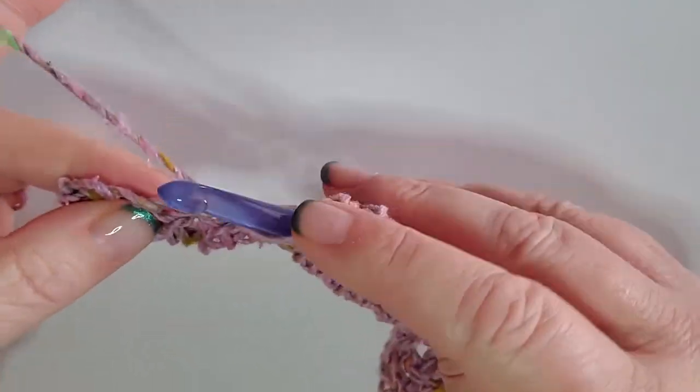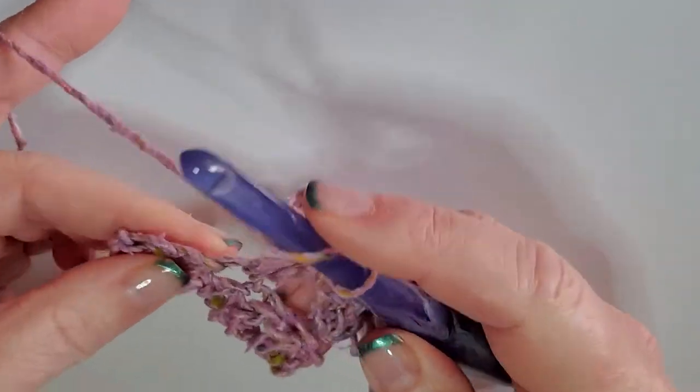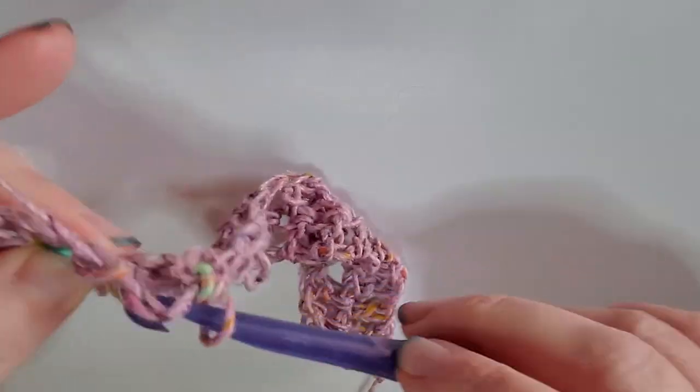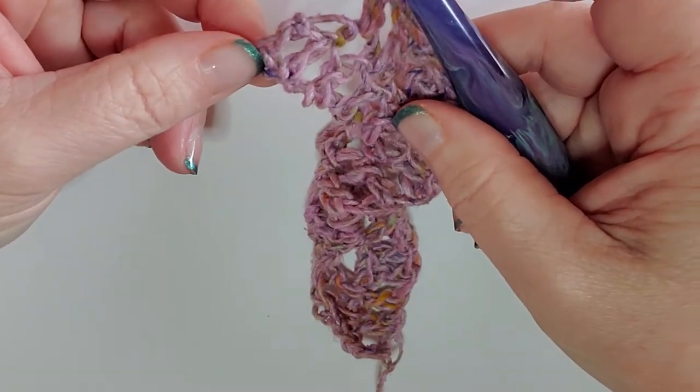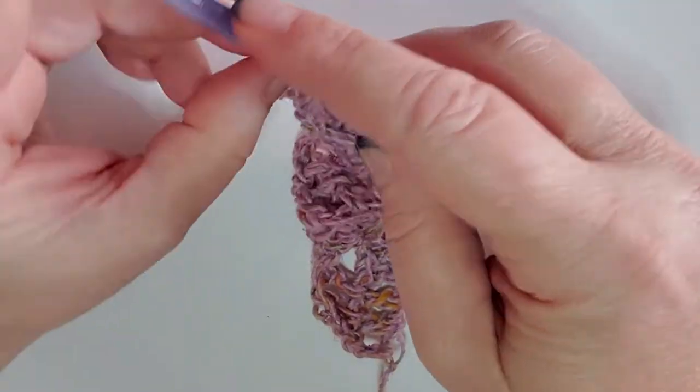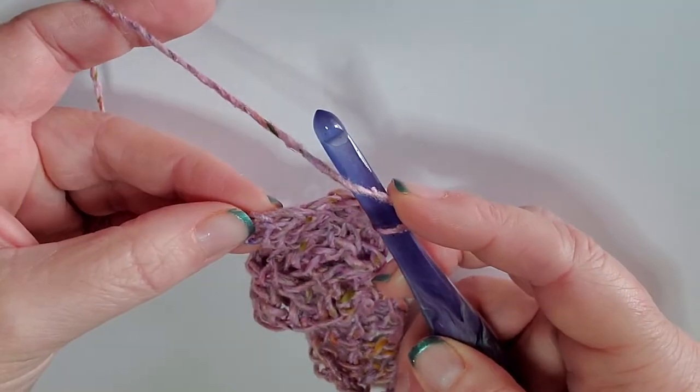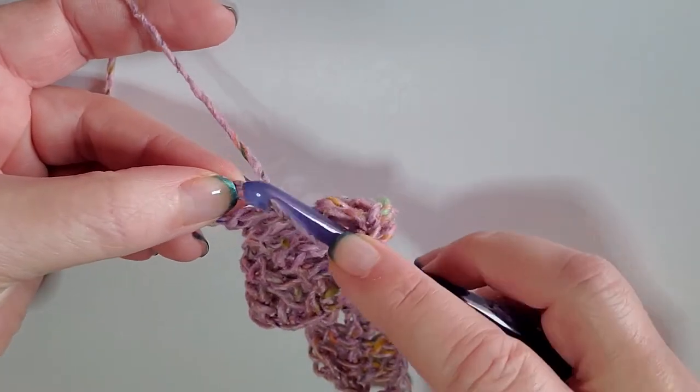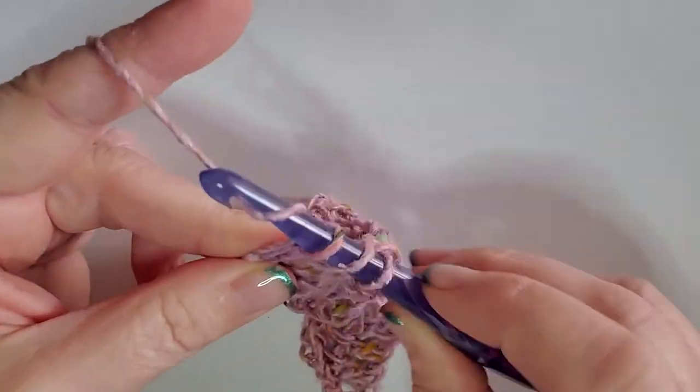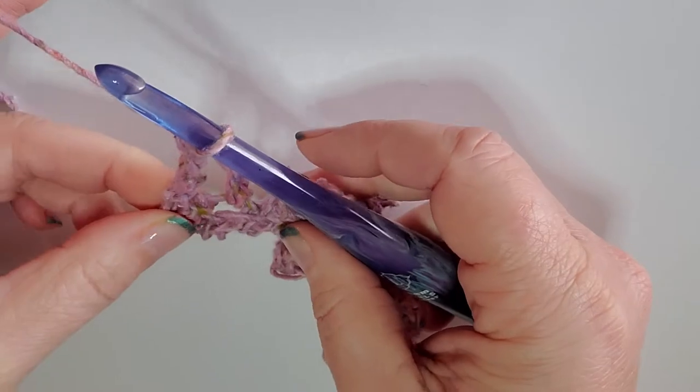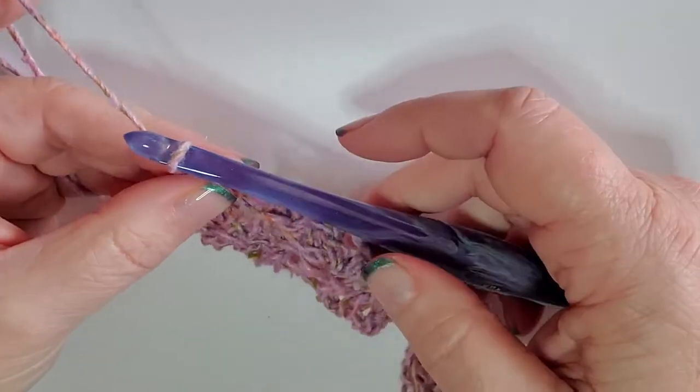You will end every row, should start with three doubles and end with three doubles. Here we are at the end of this row. Now this is a little bit wonky looking right here, it looks like we have two stitches. In order to just make that prettier, I'm going to go into the top right here of this stitch and sort of just pull it all together. Now we have just a beautiful three right there.